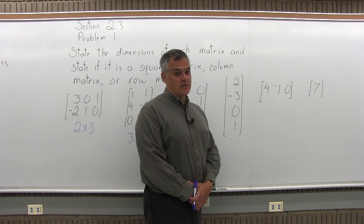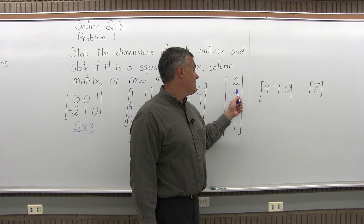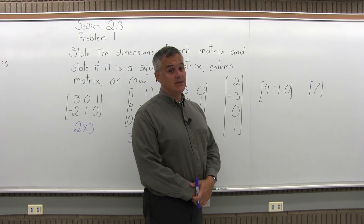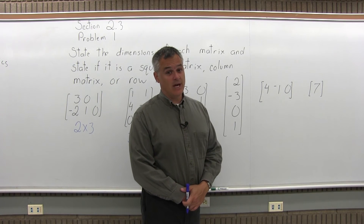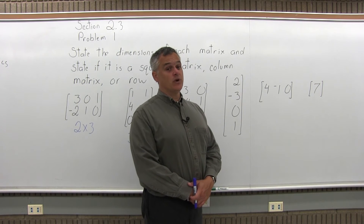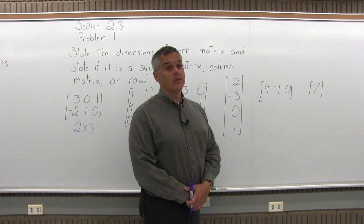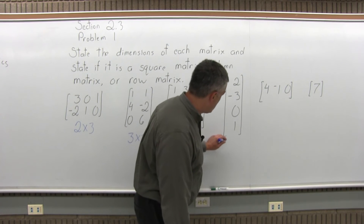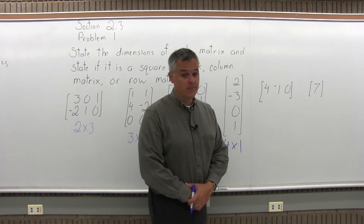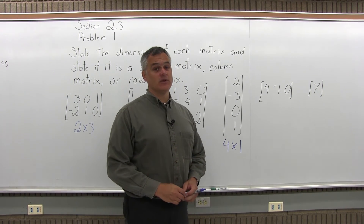The next matrix has a 2 on top all by itself, a negative 3 underneath, a 0 under that, and then a 1 — all by themselves. The dimensions are 4 by 1: there are 4 rows and 1 column, written 4×1. Is it a square matrix? No, because it does not have the same number of rows as columns.